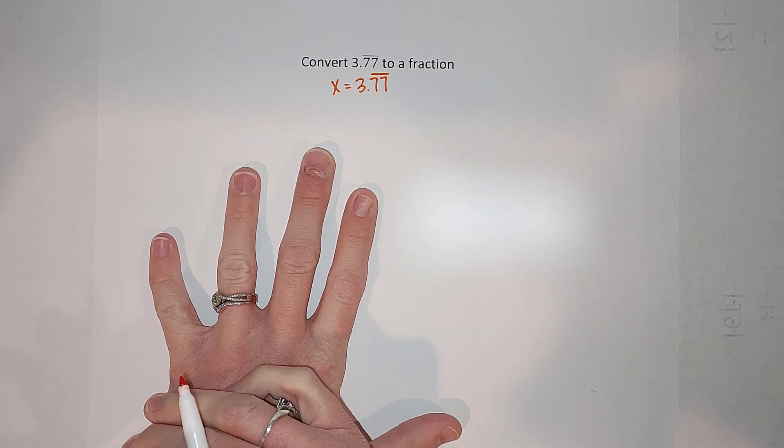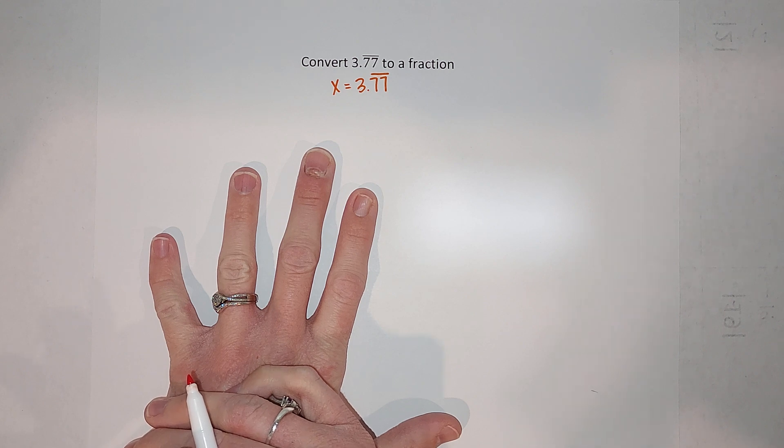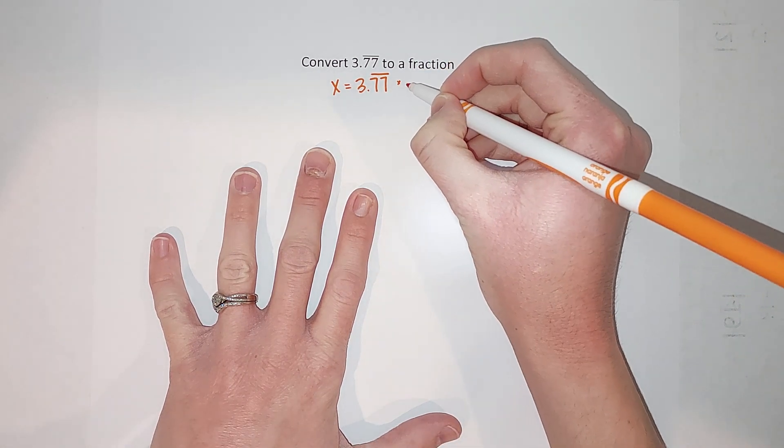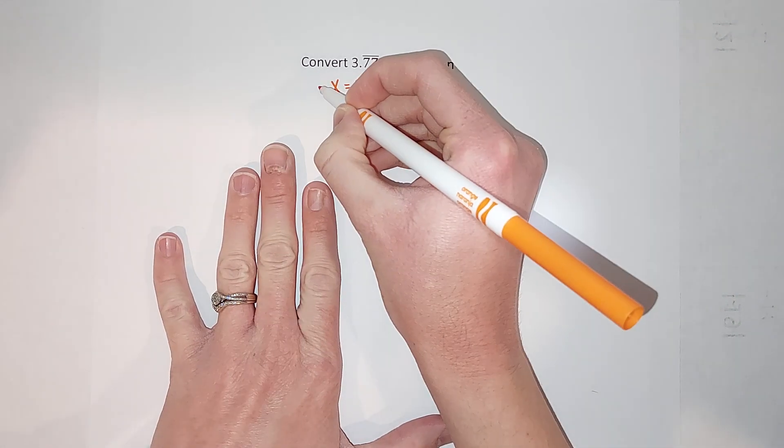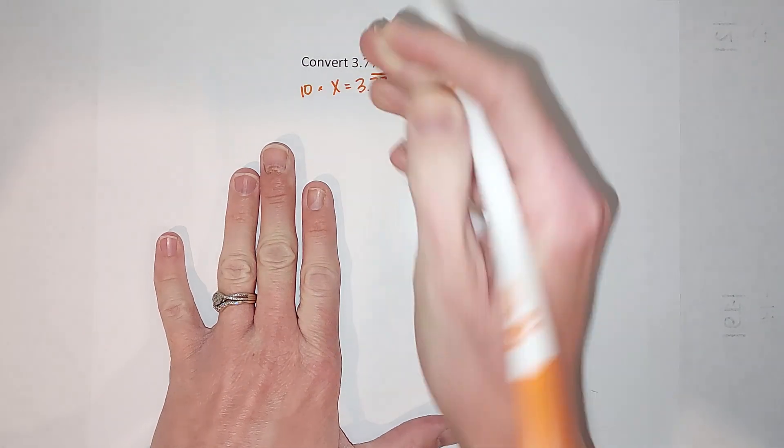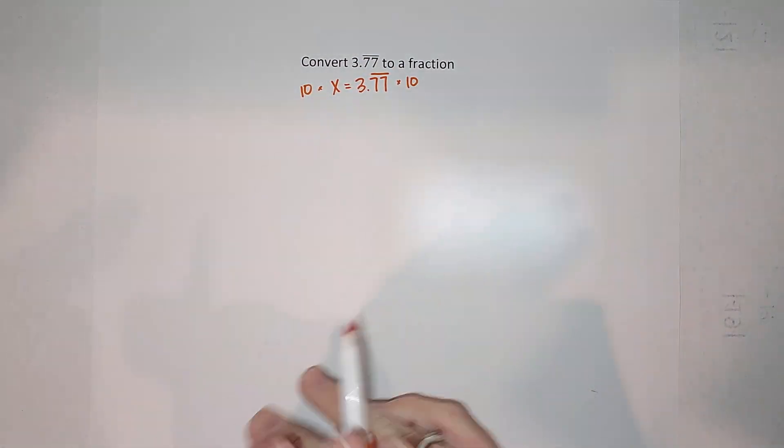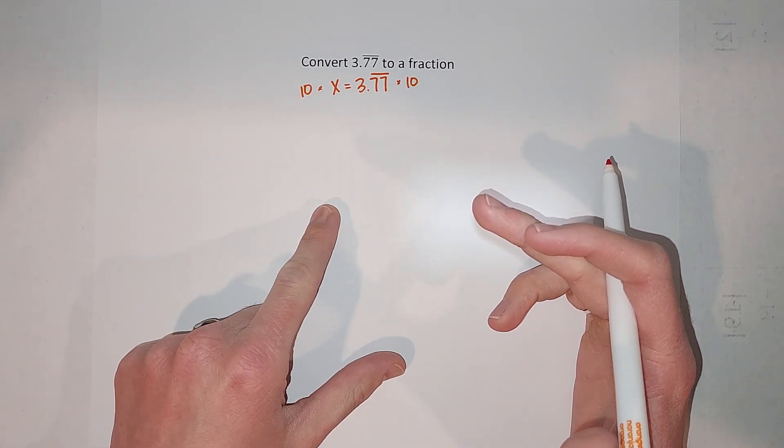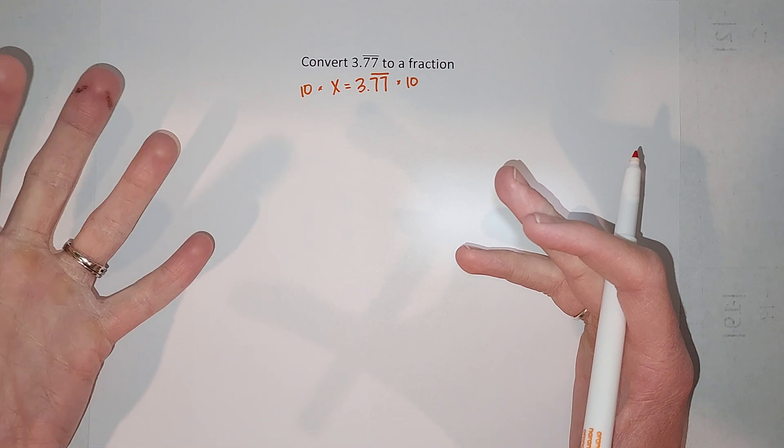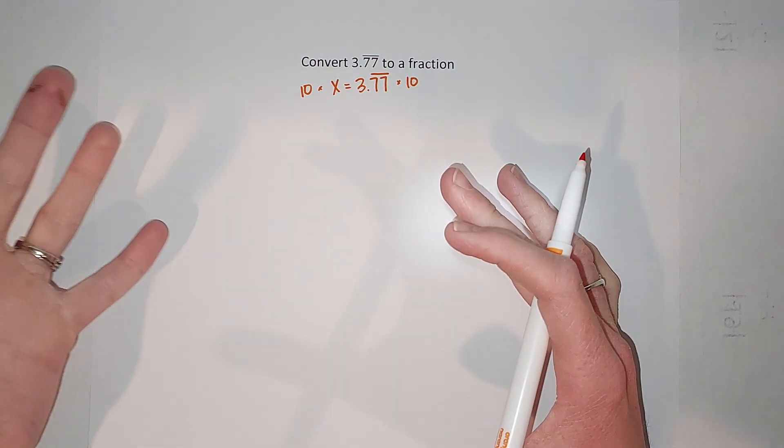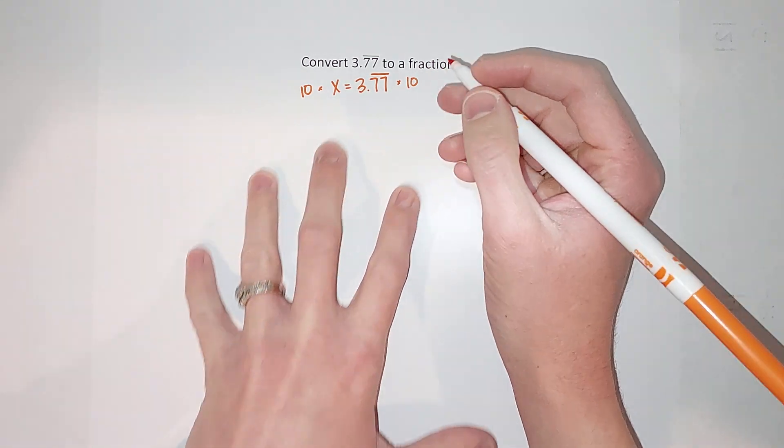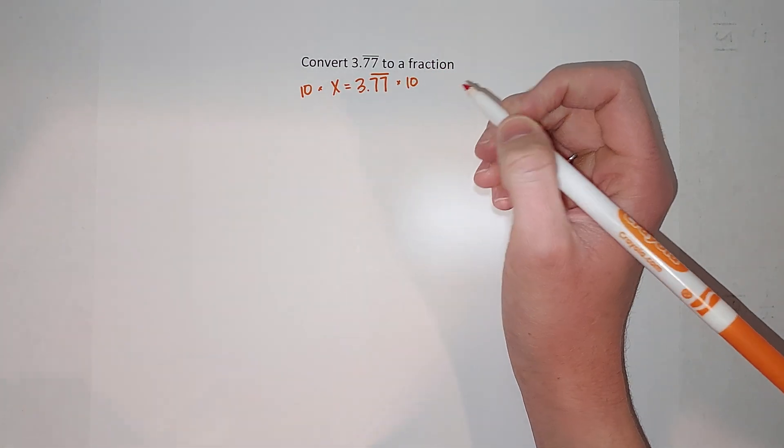Now what we're going to do next—hang with me if you're like why is she doing that—we're going to multiply both sides by 10. As long as I multiply both sides I'm okay, my equation still stays true. This is just a strategy that someone figured out to figure out the fraction. I'm not just pulling this out of nowhere, it's just an awesome strategy someone figured out.